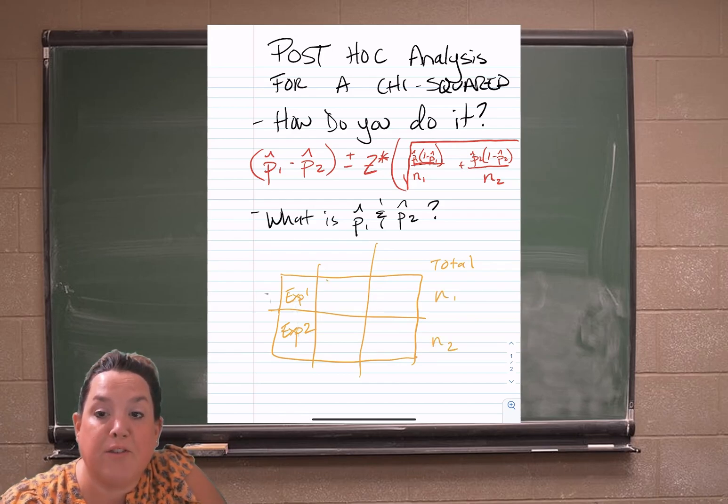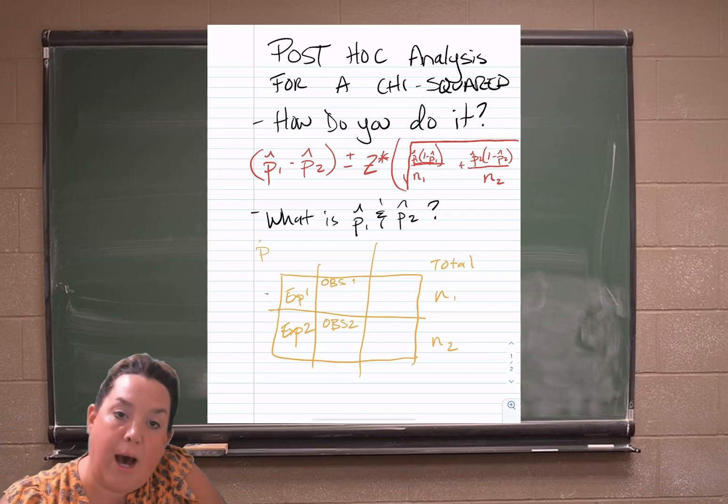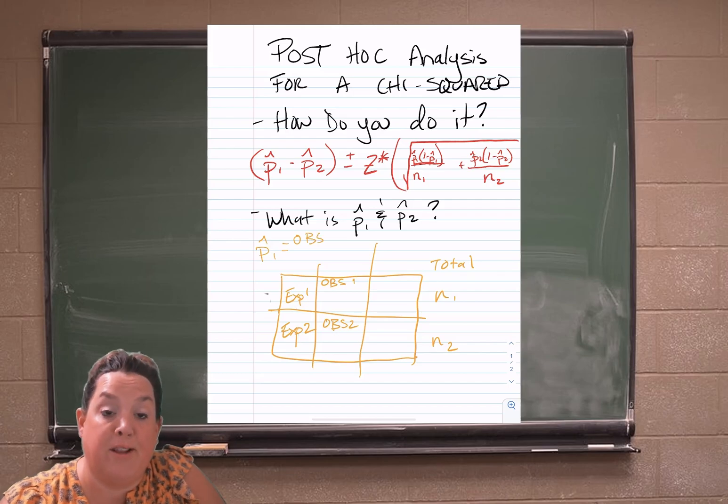If you take the observed count for the explanatory variable from one row and divide by the total for that row, and then similarly, you take the observed count for the explanatory variable in the second row and then divide by the total for that row.